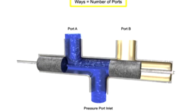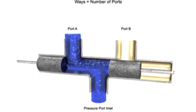A way refers to the number of active porting connections called ports. This valve has three ports, so it is a three-way valve.